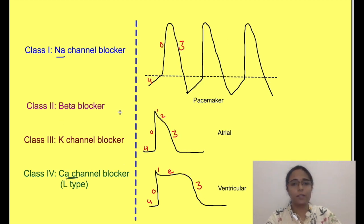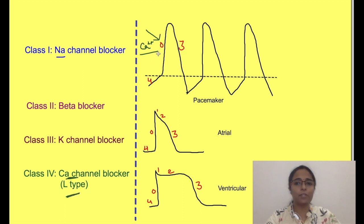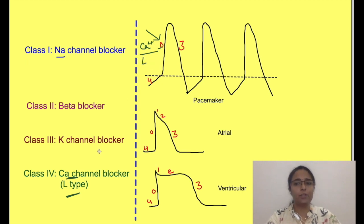Class 4 drugs act on phase 0 of the action potential of pacemaker cells, which occurs due to entry of calcium ions through calcium channels. These are L-type calcium channel blockers, so they affect phase 0 which is caused by opening of L-type calcium channels.